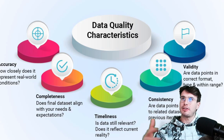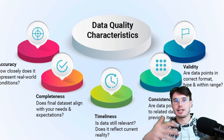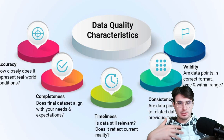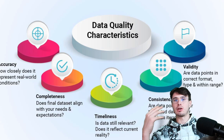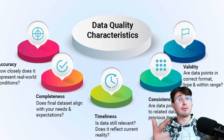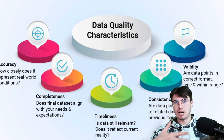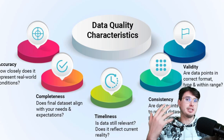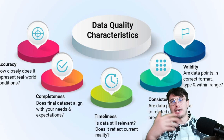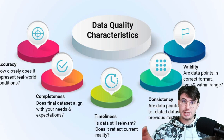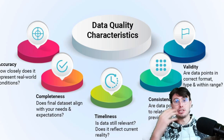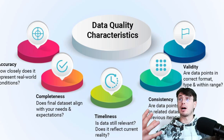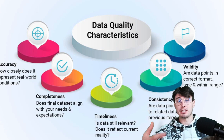I've got a graphic up on the screen of the five main characteristics of what data quality checks are used for. At its base level, data quality checks are exactly like they sound — they are systemic procedures that ensure the accuracy, consistency, and reliability of data during collection, processing, and even maintenance at rest. These checks scrutinize data for errors, inconsistencies, and inaccuracies, making sure data sets are complete, full, and of the expected format, polished and primed for analysis.